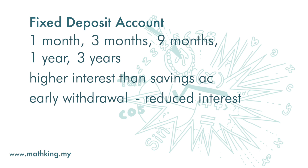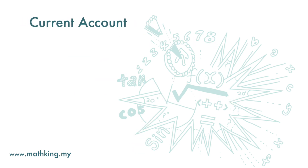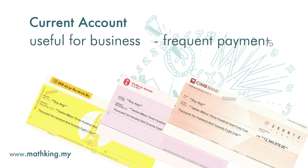Withdrawal from a fixed deposit can be done only at bank branches and not at an ATM machine. In a current account, you are given the convenience of using checks. This is useful for business people who need to make frequent payments, often of large amounts. A check is useful when you want to make a payment of, say, 30,000 ringgit, where an ATM machine would be inappropriate. Typically, a current account does not offer interest for deposits.